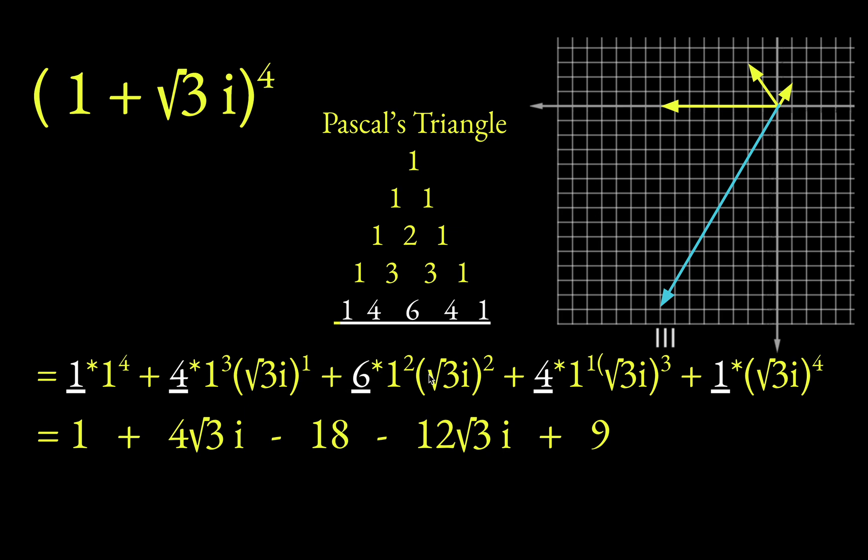Here we have a 6 times root 3 squared, which, well, root 3 squared would be 3. But then i squared is negative 1. So we basically have 6 times negative 3. That's negative 18.